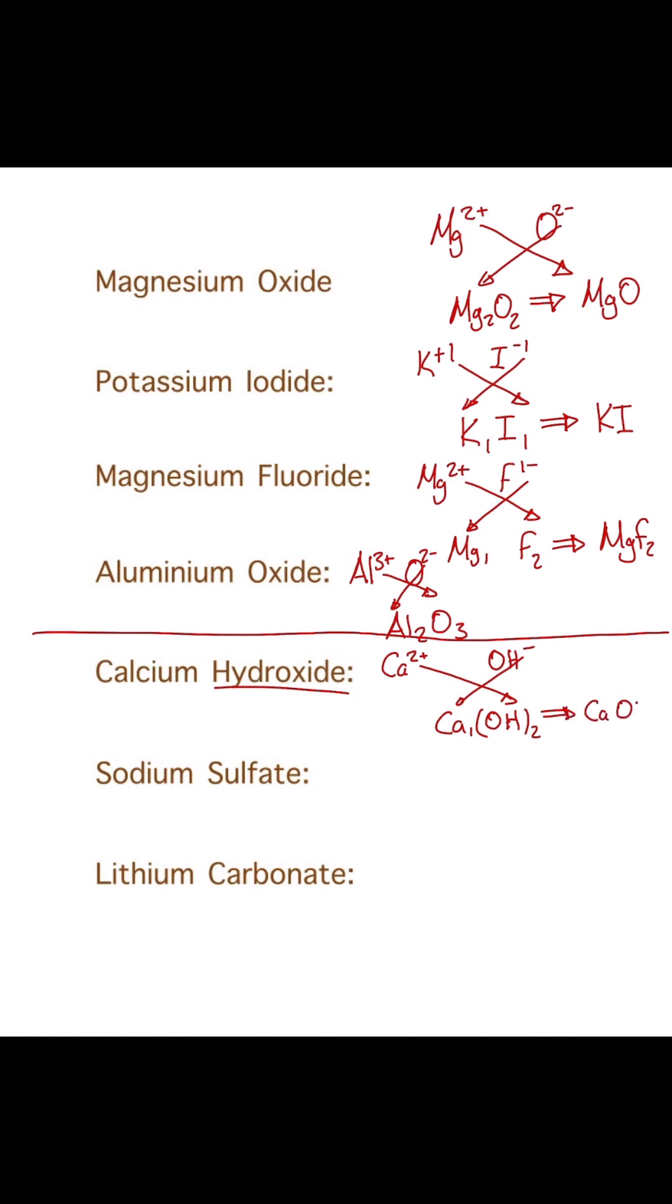Sodium sulfate: sodium is Na plus one. Sulfate is another one you need to memorize as SO4 2 minus. Swapping those round gives us a two on the sodium, so that's Na2, and a one on the SO4, which we don't need to write. So we can write that as Na2SO4. You don't need brackets this time because they're all times one.